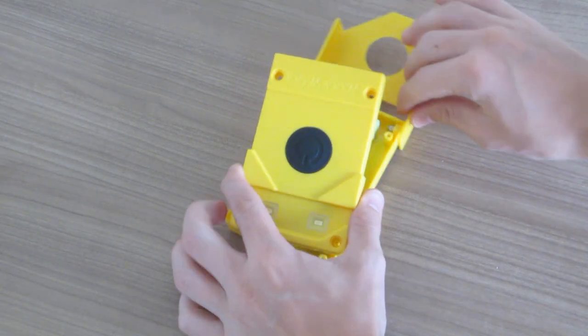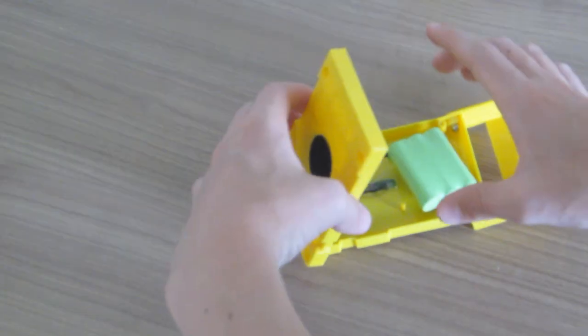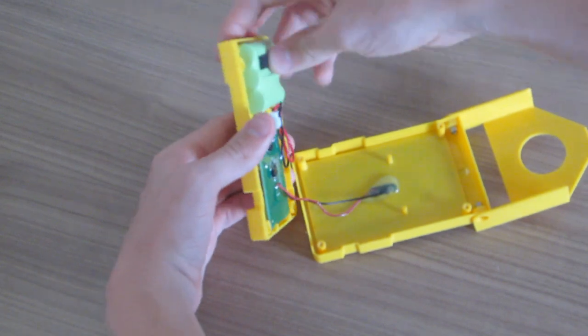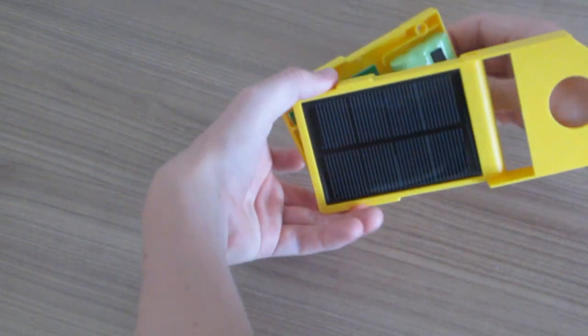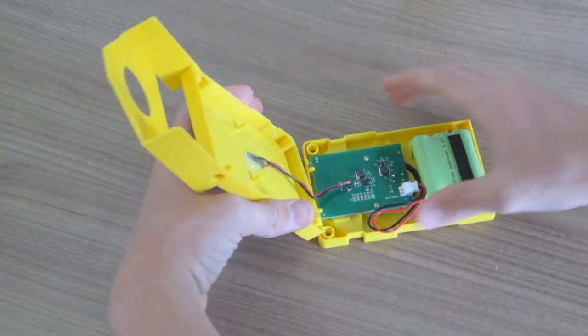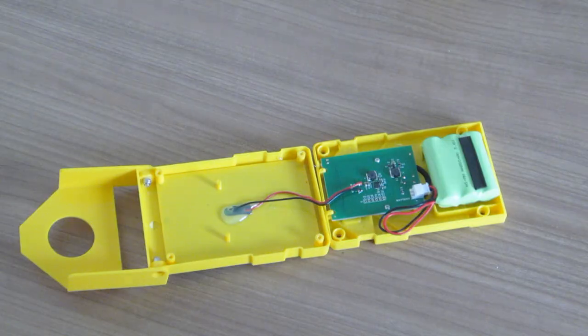Here I opened the WakaWaka Light, and as you see here, there are three AA batteries which provide the lighting for 80 hours, 16 hours, or eight hours. Here's the motherboard and solar light connector.